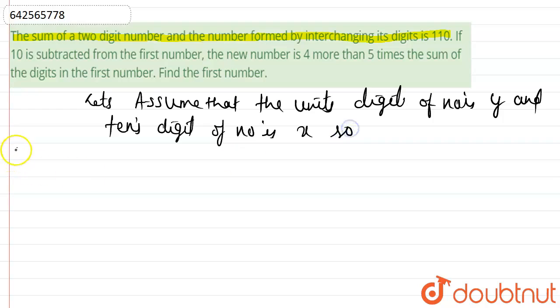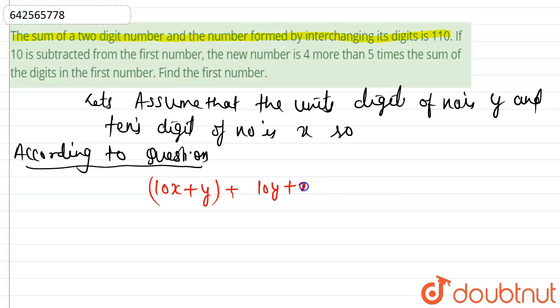According to the given question, we can write the sum of the two-digit number, which is 10x plus y (10 times the tens digit plus the unit digit), plus the number formed by interchanging its digits, which is 10y plus x, equals 110.